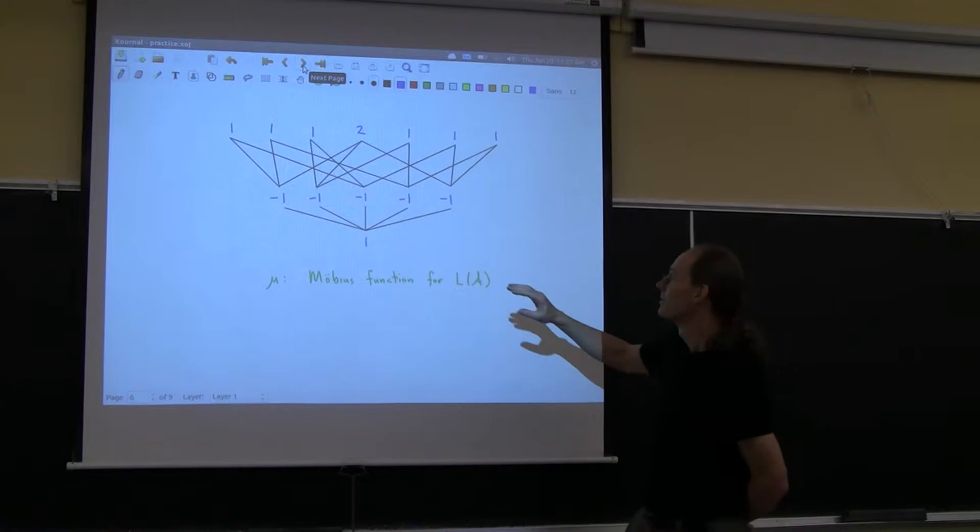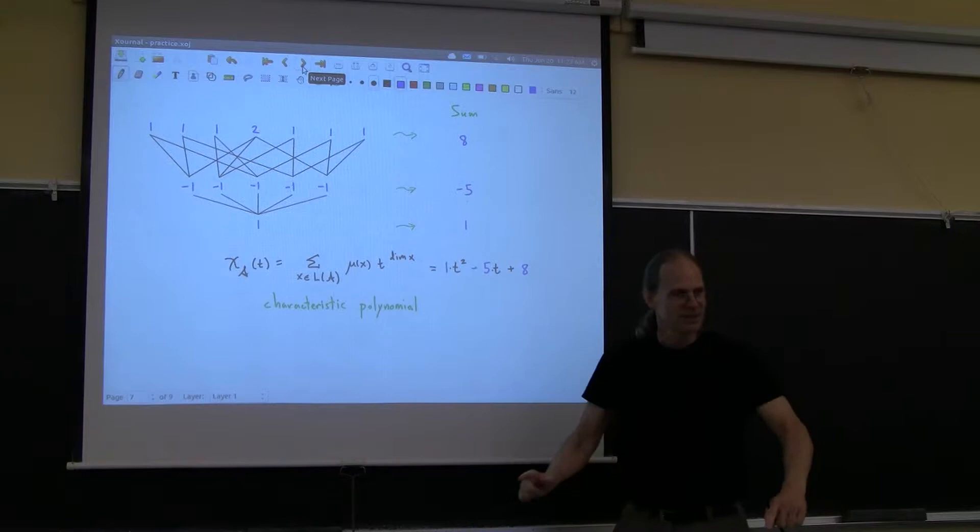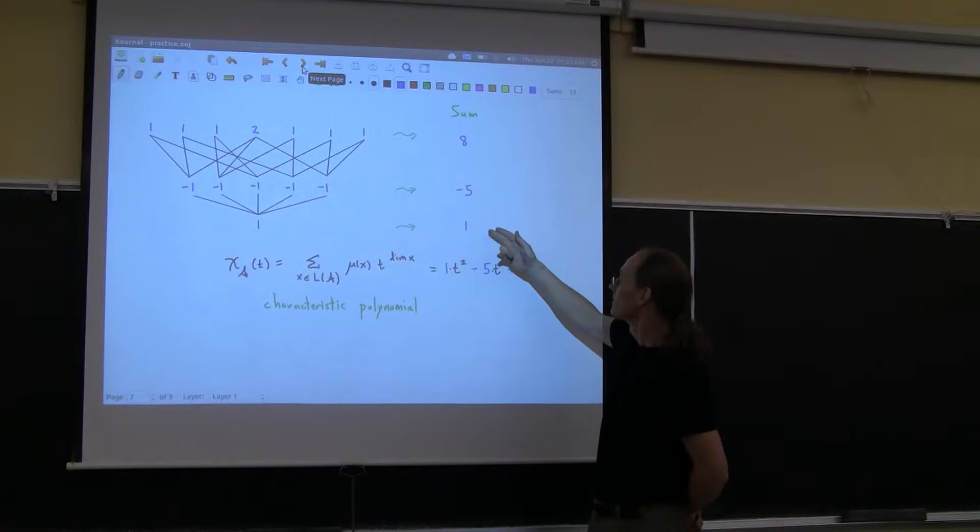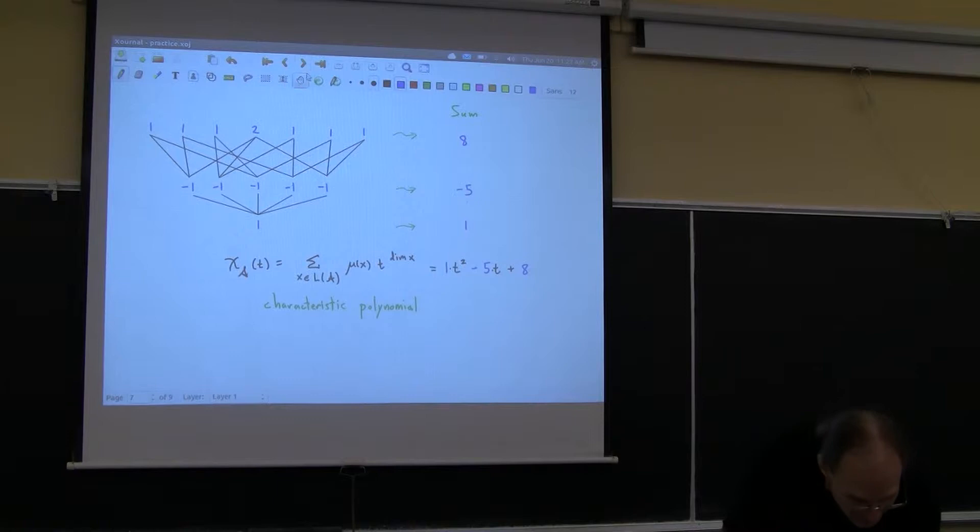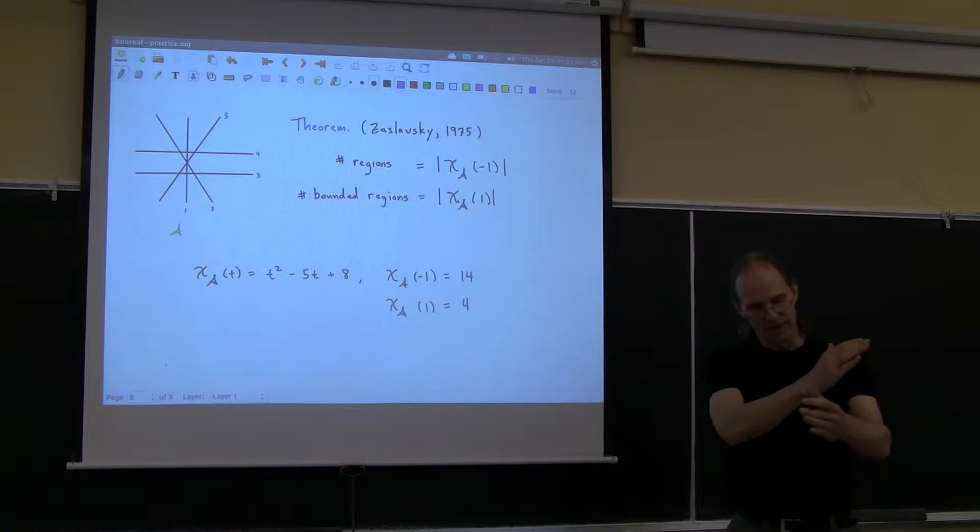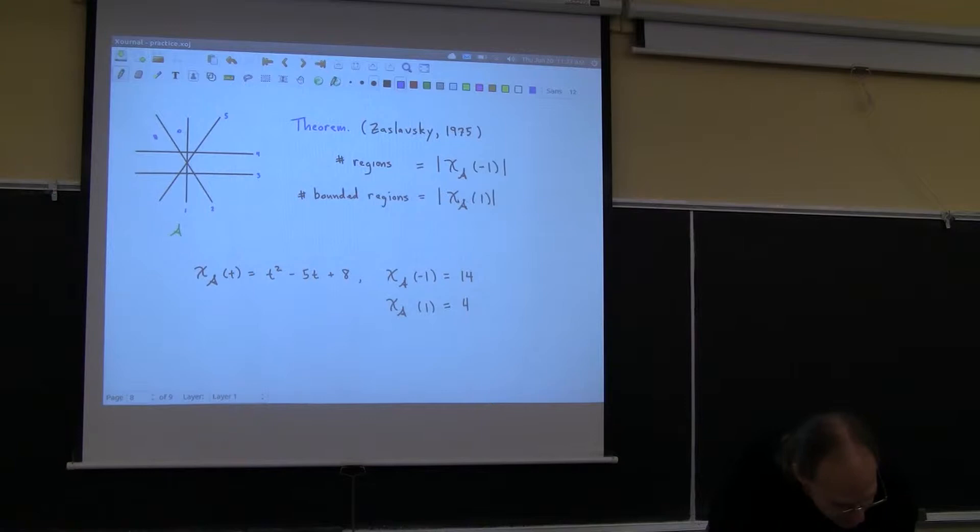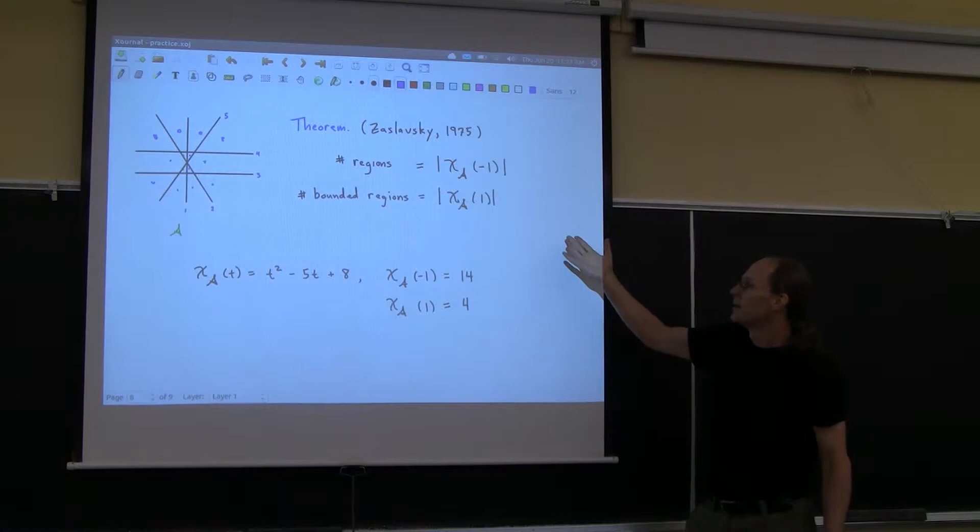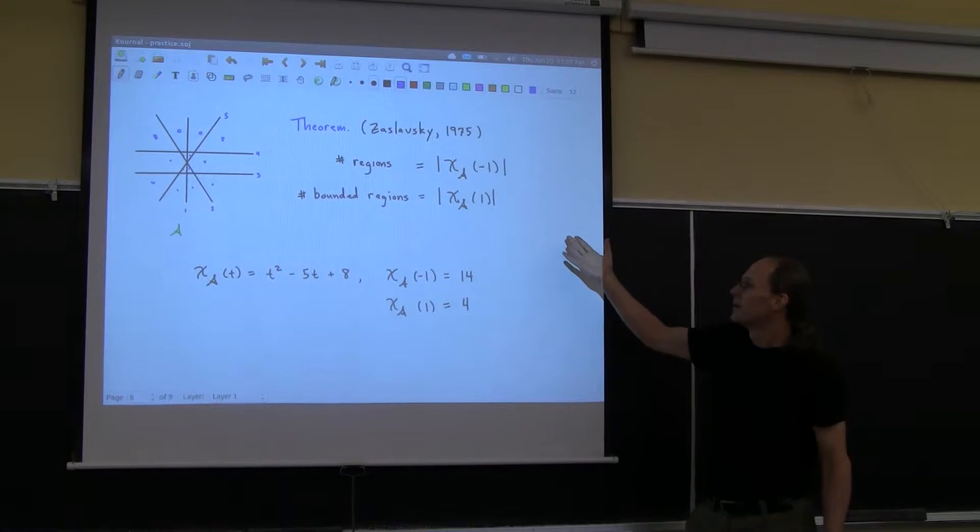And then the next step, the penultimate slide here for this is you create this thing called the characteristic polynomial. So what you do is you add up the rows. So I get these numbers, eight minus five, one, and you put them in front as coefficients in a polynomial. That's the characteristic polynomial. And the cool theorem is, well, whenever you have a hyperplane arrangement, these hyperplanes dice up space into these regions. Right here, you can, I'm putting dots in each of the regions right now. If you take the characteristic polynomial and you evaluate it at special points, you can figure out how many regions there are. So here at minus one, you get 14. There are 14 regions there. And four of them are bounded, these four guys. That's a cool theorem.